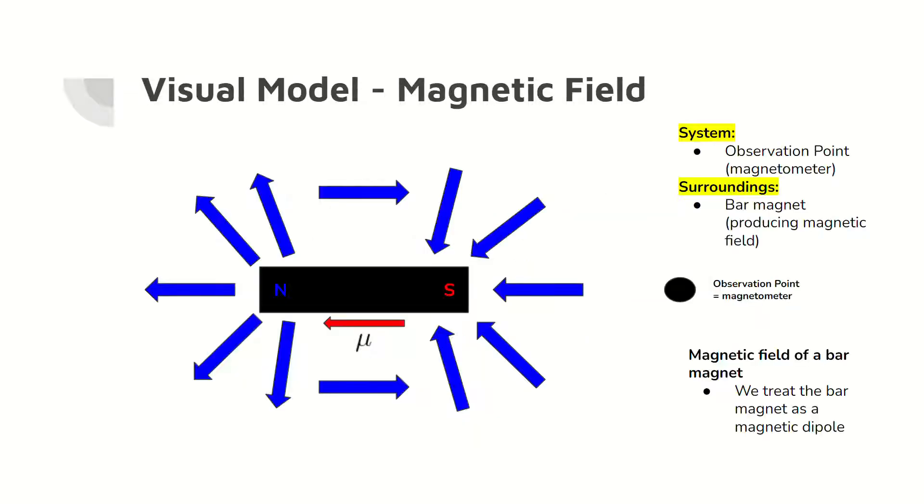Here is a visual concept of the magnetic field of the bar magnet. Notice that the magnetic field goes from south to north pole and curls around to the south pole. This system is the observation point, or the magnetometer, and the surroundings is the bar magnet.